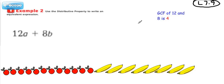That means we want to divide both of these numbers by 4. We're going to do 12 divided by 4, and 8 divided by 4. 12 divided by 4 is 3, and 8 divided by 4 is 2.